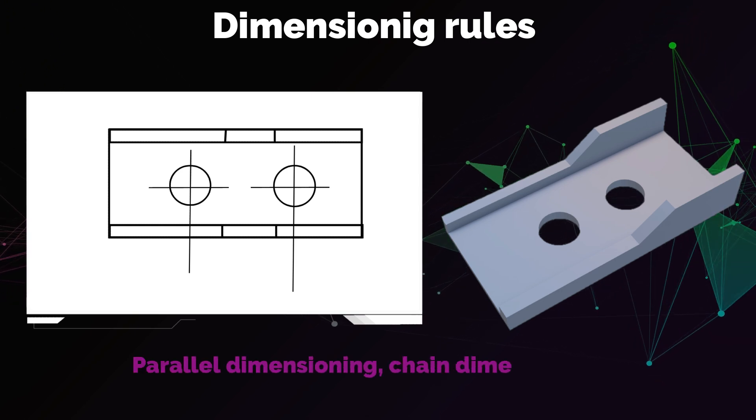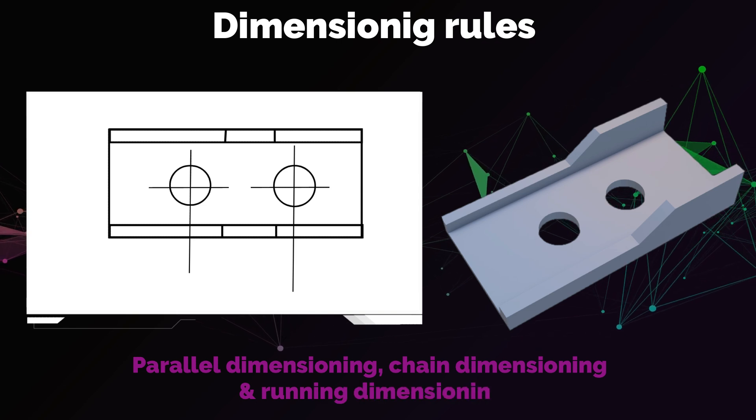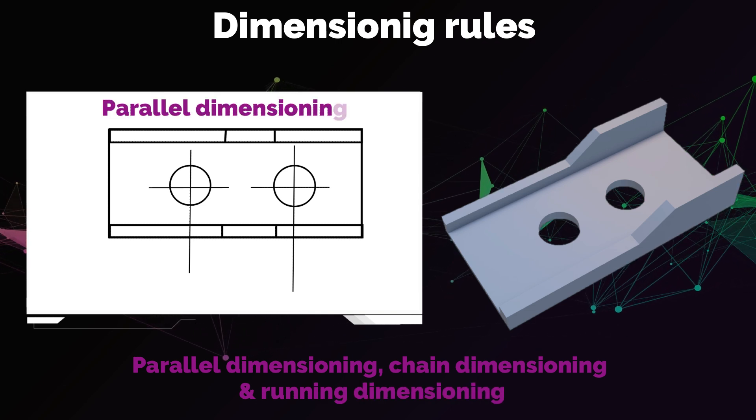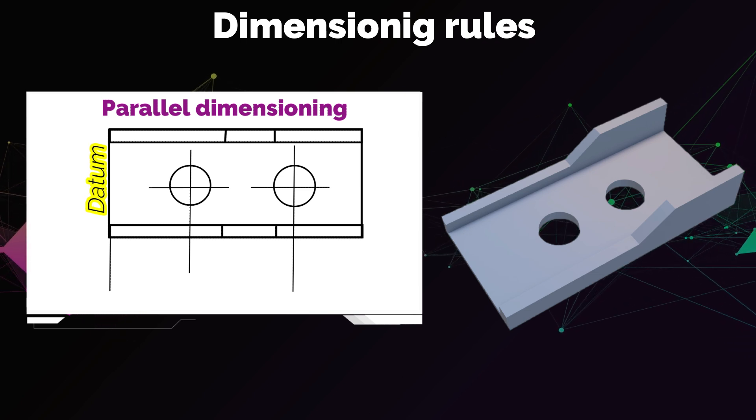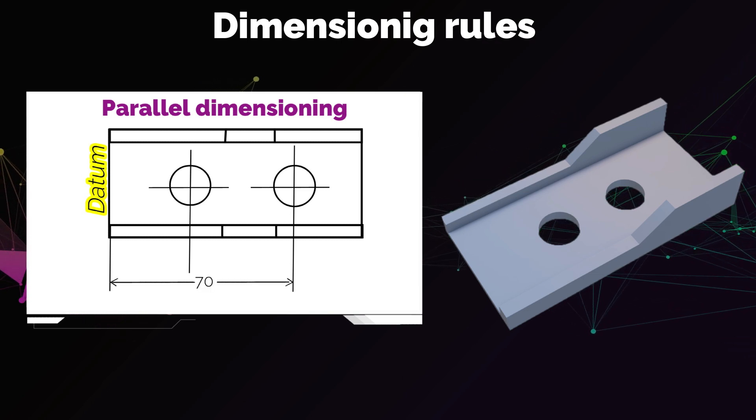Parallel dimensioning, chain dimensioning, and running dimensioning. In parallel dimensioning, dimension lines of the different features start from a datum or reference feature like the edge of the part and are placed parallel to each other.